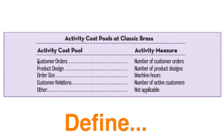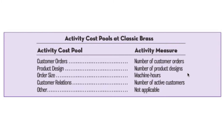Here are the activity cost pools that the company has decided to use. We have customer orders at the batch level, product design at the product level, order size at the unit level, customer relations at the customer level, and finally a category called other — overhead that can't be traced to anything, which we call organization-sustaining. We also have our activity measures. Step one is to define our activities, activity cost pools, and activity measures. So our estimate of customer order overhead divided by the number of customer orders gives us a rate per customer order.